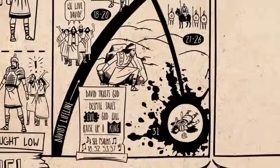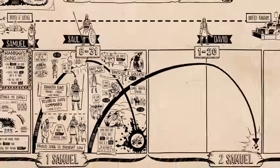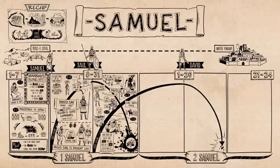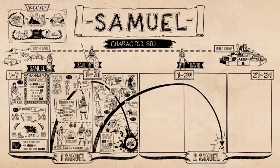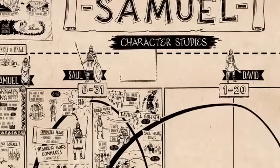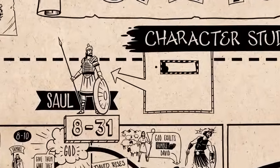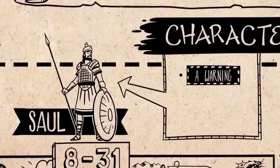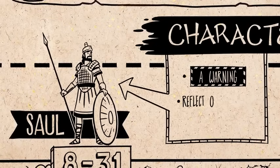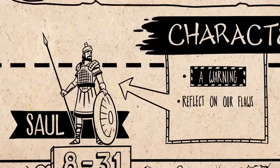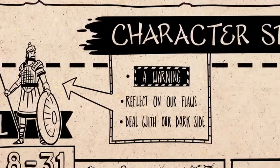First Samuel tells some of the most intricate, well-told stories you find anywhere in the Bible. The characters Saul and David are portrayed very realistically, put forward as character studies so that you can find yourself in them. In Saul's story we see a warning: it's crucial that we reflect on our own character flaws and how they harm us and other people. With God's help, we need to humble ourselves and deal with our dark side so that Saul's story doesn't become ours.